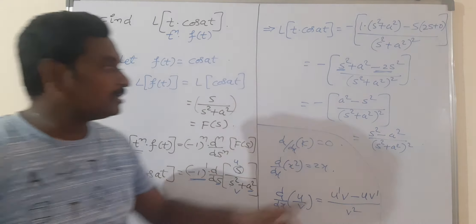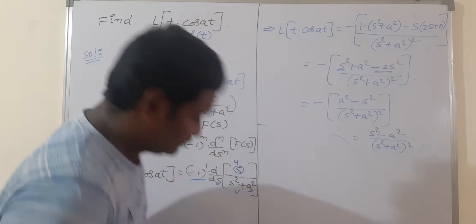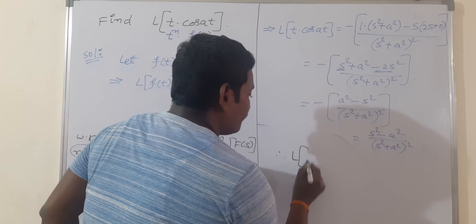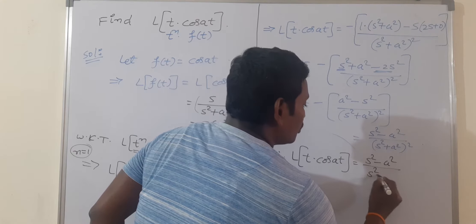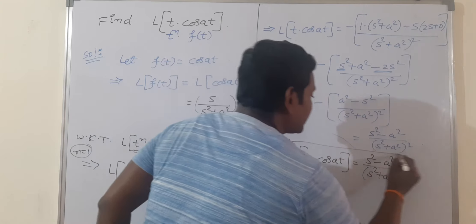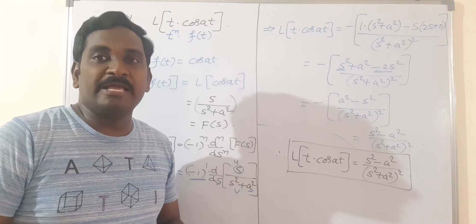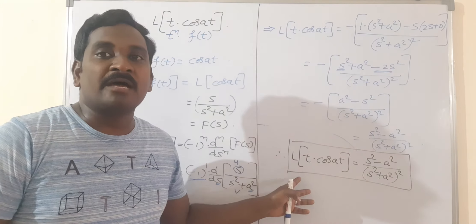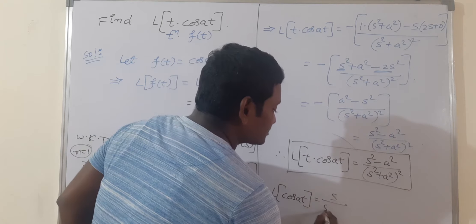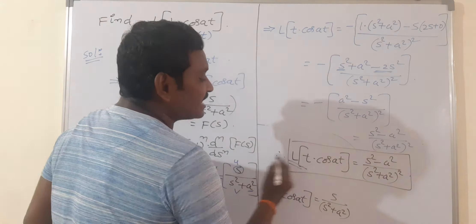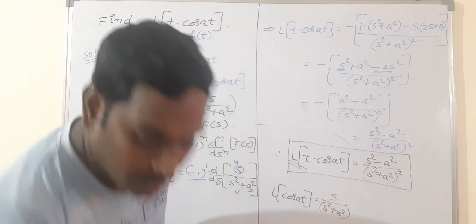This is a very important result. L{t · cos(at)} = (s² - a²) / (s² + a²)². We may use this formula in many problems, so please remember it. We already know L{cos(at)} = s/(s² + a²). Similarly, remember this new formula: L{t · cos(at)} = (s² - a²) / (s² + a²)².